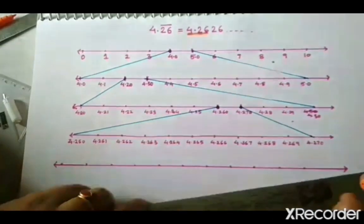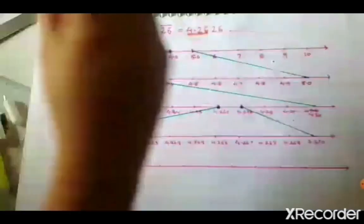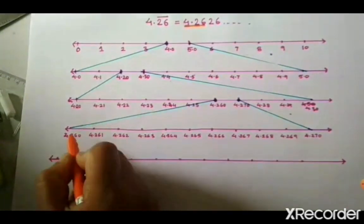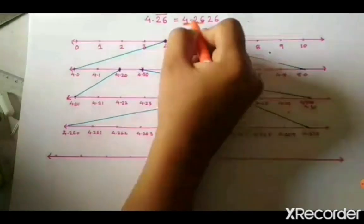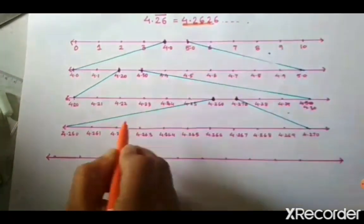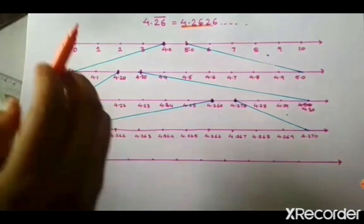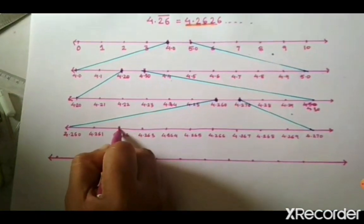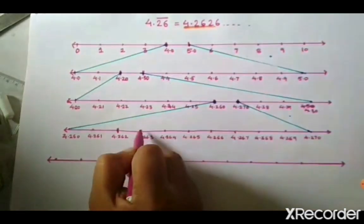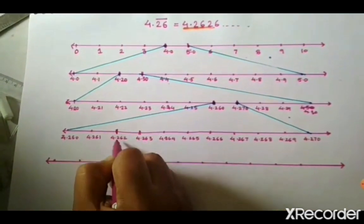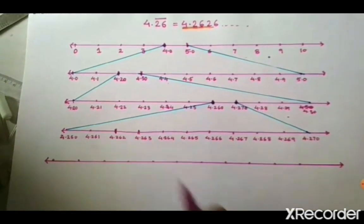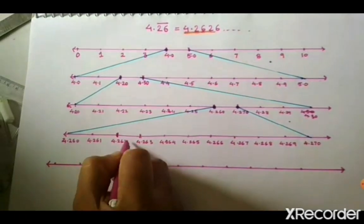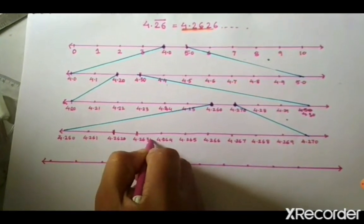Now, my next digit is 6. Let me find where 4.262 is — that point is right here. My next digit is 6, so I want to magnify the range 4.262 to 4.263. I will take the next number line starting from 4.2620 and mark each subdivision.